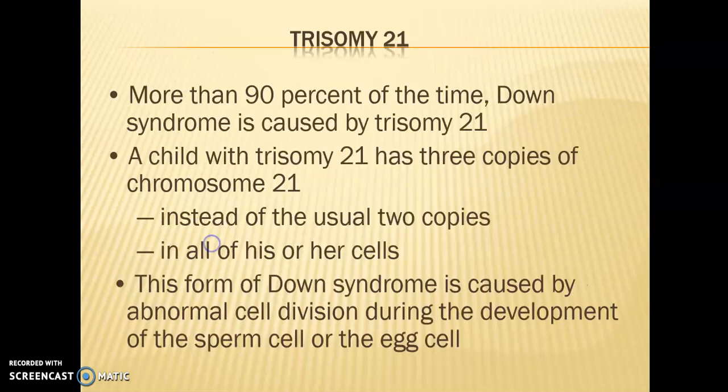In Trisomy 21, more than 90 to 94 percent of the time Down syndrome is caused by having three copies of chromosome 21 instead of the usual two. This form of Down syndrome is caused by abnormal cell division during the development of the sperm cell or the egg cell.